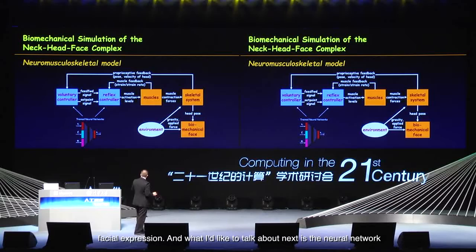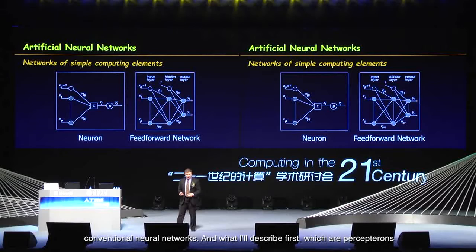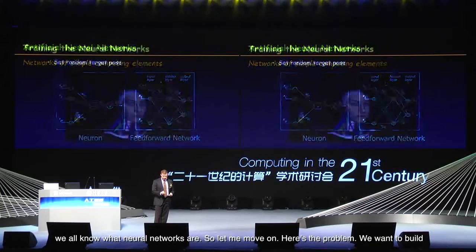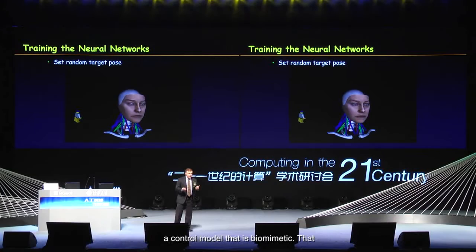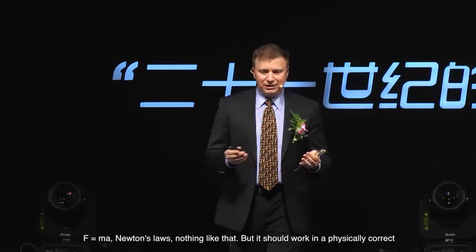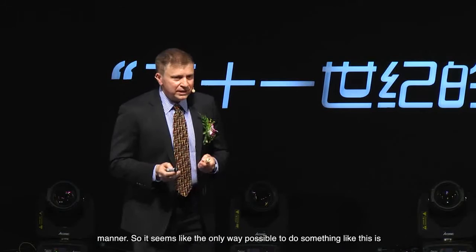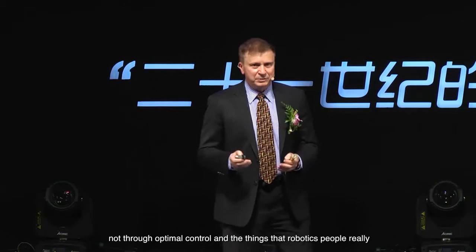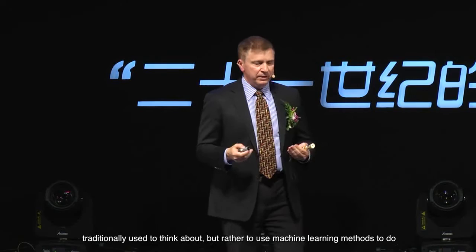What I'd like to talk about next is the neural network — the neuromuscular controller that controls the muscles. These are conventional neural networks, perceptrons essentially. We want to build a control model that is biomimetic: it shouldn't need to know anything about physics — no F equals ma, no Newton's laws. But it should work in a physically correct manner. The only way to do something like this is not through optimal control, as robotics people traditionally use, but rather through machine learning methods.